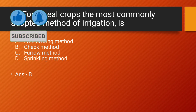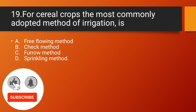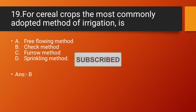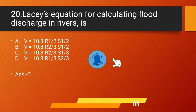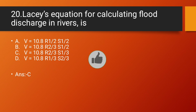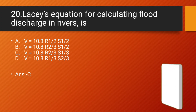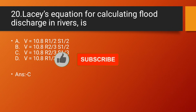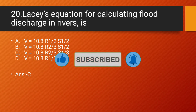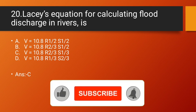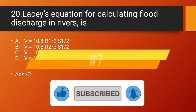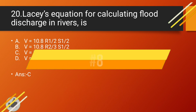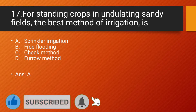Question number 19: For cereal crops, the most commonly adopted method of irrigation is — Answer: Check method. For cereal crops, the most commonly adopted method of irrigation is the check method. Question number 20: Lacey's equation for calculating flood discharge in a river is — Option C: V = 10.8 × R^(2/3) × S^(1/3), which is the correct answer, where Manning's roughness coefficient is expressed in units of m^(−1/3). Due to topography, if space is not available, the most suitable type of spillway is the shaft spillway. Please subscribe to our channel and like this video if you liked it.